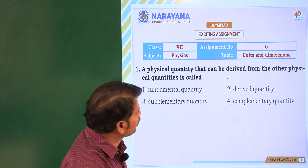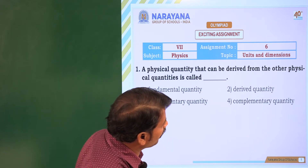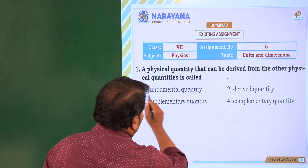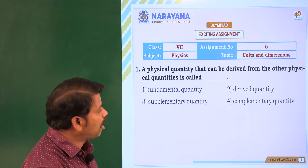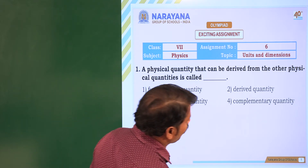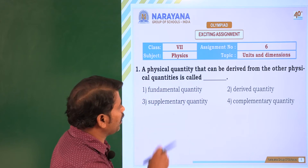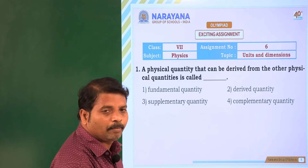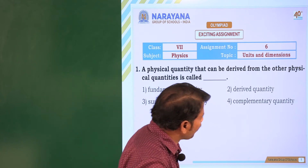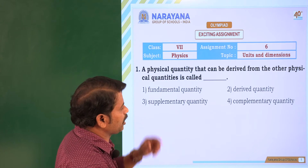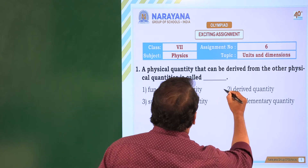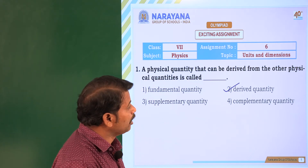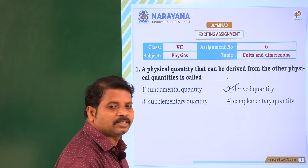Going to the first question: a physical quantity that can be derived from other physical quantities is called dash. The first option is a fundamental quantity — they are independent. The second is derived quantity — they are dependent on fundamental quantities. The third is supplementary quantity, also a subtopic of fundamental. The fourth is complementary quantity. The correct answer is derived quantity — physical quantities which depend on fundamental quantities are called derived quantities.